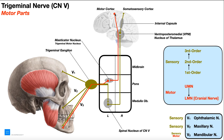Up here we have the motor cortex. To execute movements of any of the mastication muscles — say, to chew food — that motor program begins in the motor cortex. This is the cell body of the upper motor neuron. We follow it down from the motor cortex into the brainstem, down through the midbrain, and then it enters the pons, where decussation occurs. So the motor cortex exerts contralateral control, and the pons is where that decussation occurs. The upper motor neuron then synapses with a lower motor neuron.